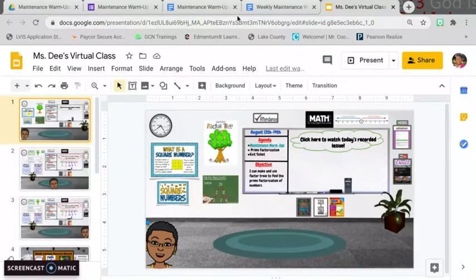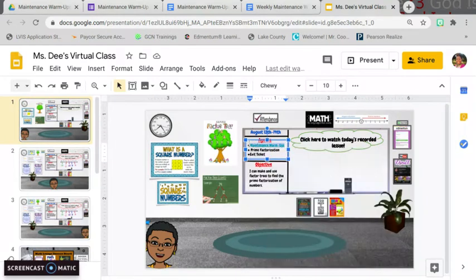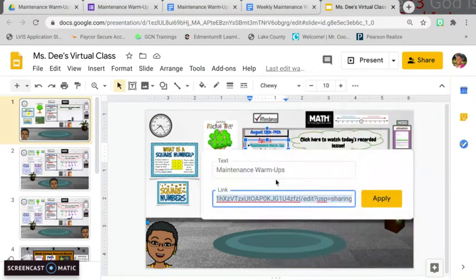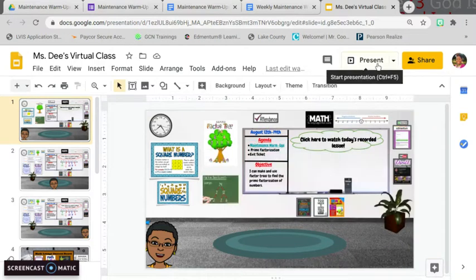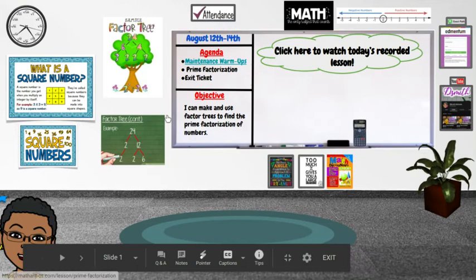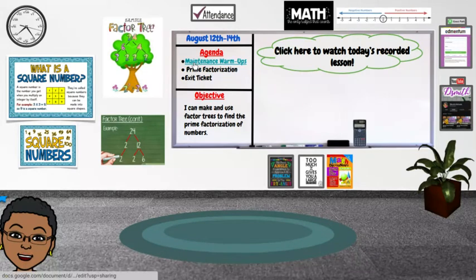Once I got to my classroom, I went to my agenda. I highlighted it. I right-click. I click link, and I linked that document to it. So now, once I go in present mode, the students will come to my Google Classroom, to their virtual classroom, and they will then go ahead and click the agenda, and it takes them to that page.